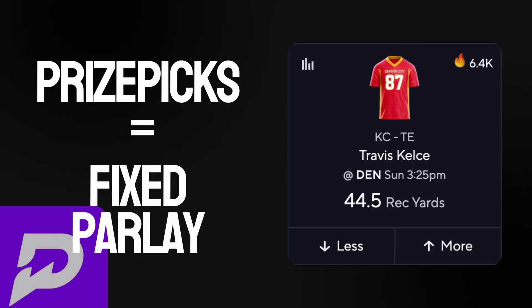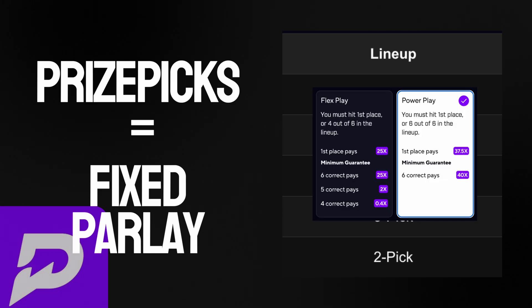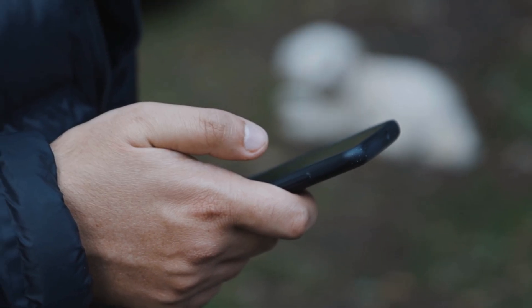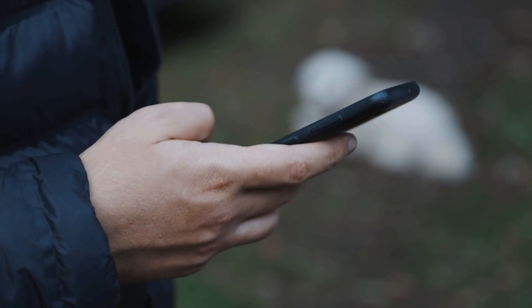Now, how their platform works—all you need to do is just pick more or less on a player's prop. You can throw them into either a two-leg parlay up to a six-leg parlay, and all of these have predetermined multipliers depending on the slip type that you choose, which is a power play or a flex play. Now the twist is that most people just put their favorite plays in here and not think about the math to where they can actually profit long-term betting with PrizePicks.